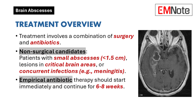Treatment. Brain abscesses are typically treated with a combination of surgery and antibiotics. Surgery may involve drainage, excision, or stereotactic aspiration, while antibiotics can be administered orally, intravenously, or intrathecally. Non-surgical treatment may be considered for patients with multiple brain abscesses less than 1.5 cm in diameter, a single lesion less than 1.5 cm, lesions in critical brain areas, or concurrent infections such as meningitis or ependymitis.